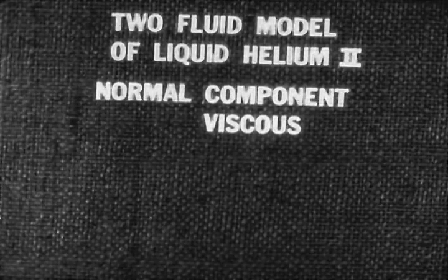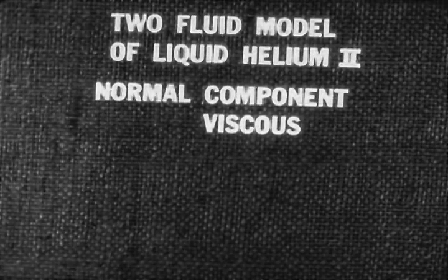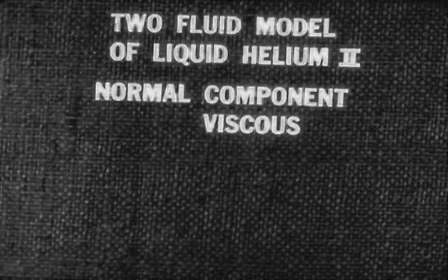This state of affairs forces us to think of helium two, the superfluid, not as a single, but as a dual liquid. It appears as if helium two had two separate and yet interpenetrating component liquids. We shall call one component normal. It is this component which we hold responsible for the appearance of viscosity below the lambda point in the rotating cylinder experiment.